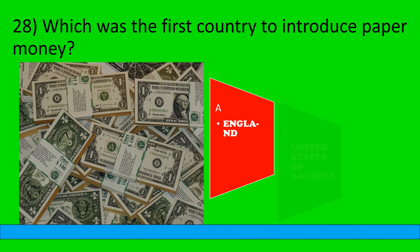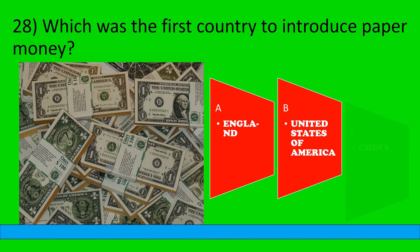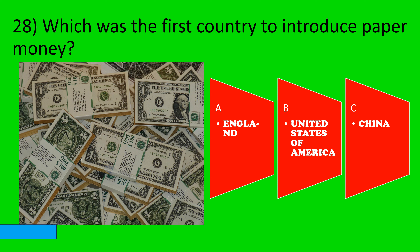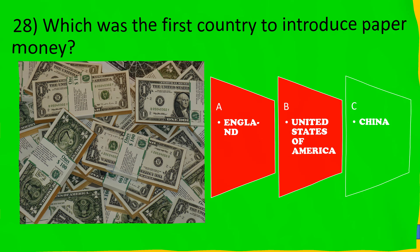Which was the first country to introduce paper money? A: England, B: USA, C: China. The correct option is C, China.